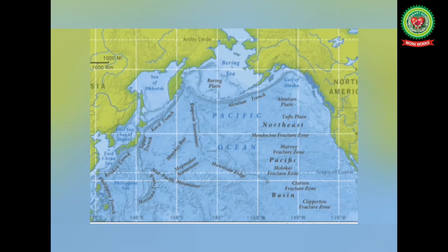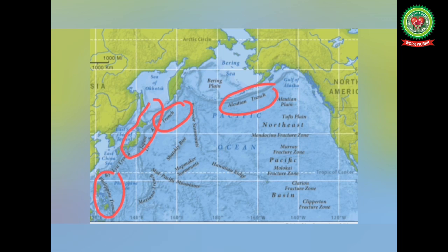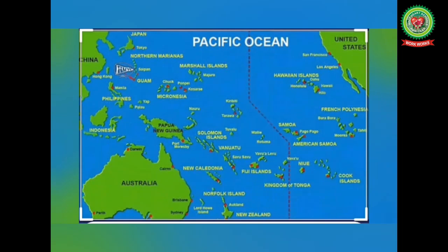The important islands in the north Pacific Ocean are the Aleutian Islands, the Coral Island, Japan, and the Philippines. The other islands in the central and south Pacific Ocean are Hawaii near the USA, the Indonesian Islands, New Zealand, and British Columbia.